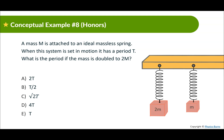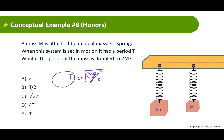A mass m is attached to an ideal massless spring with a period of T. What is the period if the mass is doubled to 2m? The period formula is T = 2π × √(m/k). If m doubles, since it's under a square root, the new period becomes √2 times T. Don't use your intuition — analyze the formula. You can verify this with real numbers to confirm.